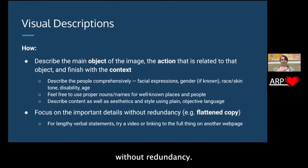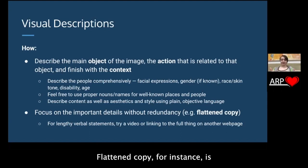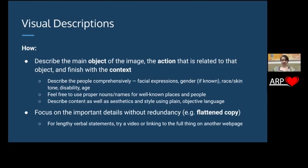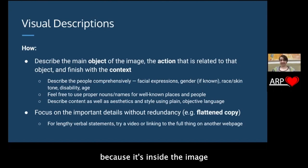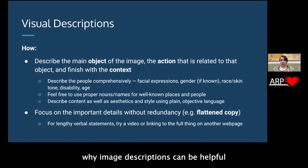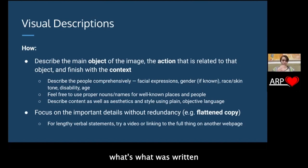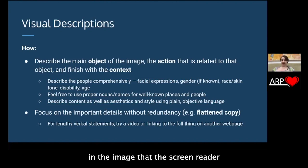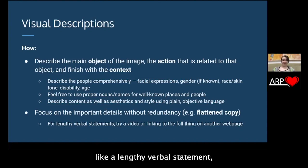Focus on the important details without redundancy — that's the main rule of thumb. Flattened copy is when text has been put in an image. That text cannot be accessed by a screen reader because it's inside the image and not somewhere where they can read it. That's why image descriptions can be helpful if you're reiterating what was written in the flattened copy in the image that the screen reader isn't able to access.